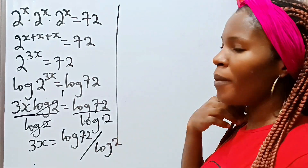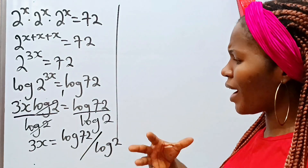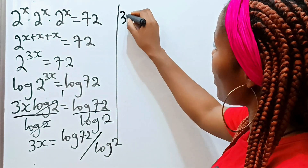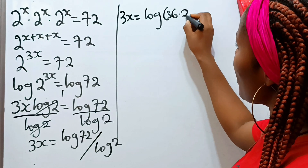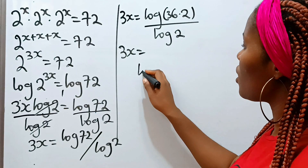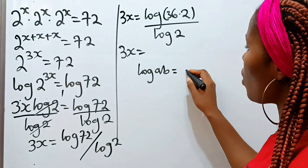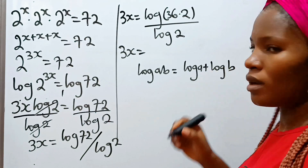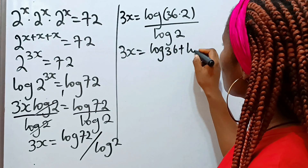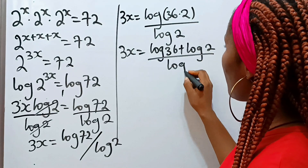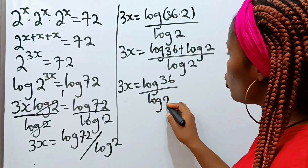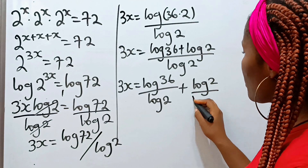Now at this point, remember the law of logarithms. We can express 72 in terms of 2 as 36 times 2. So we write 3x is equal to log of 36 multiplied by 2, divided by log 2. When you have log of a multiplied by b, that equals log a plus log b. So we can write this as log 36 plus log 2, everything divided by log 2. So we have 3x equal to log 36 over log 2 plus log 2 over log 2.